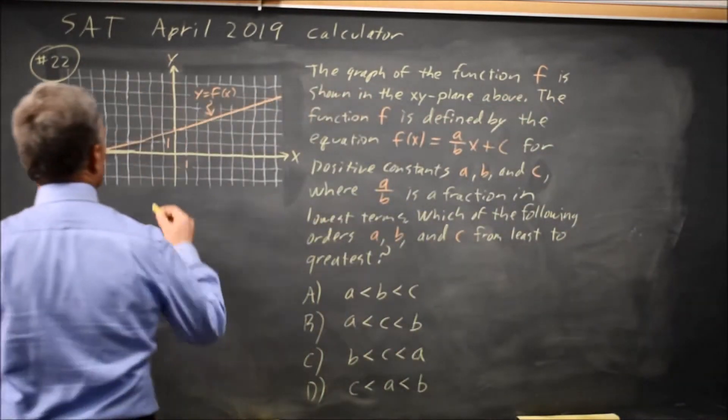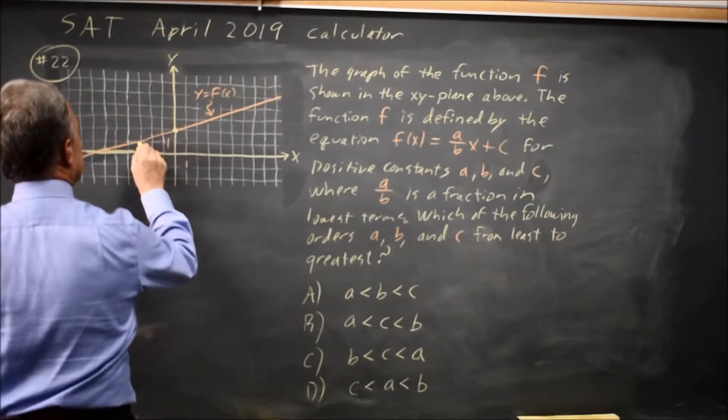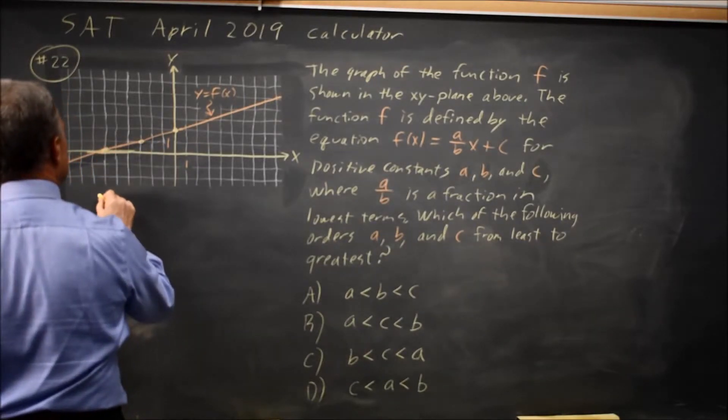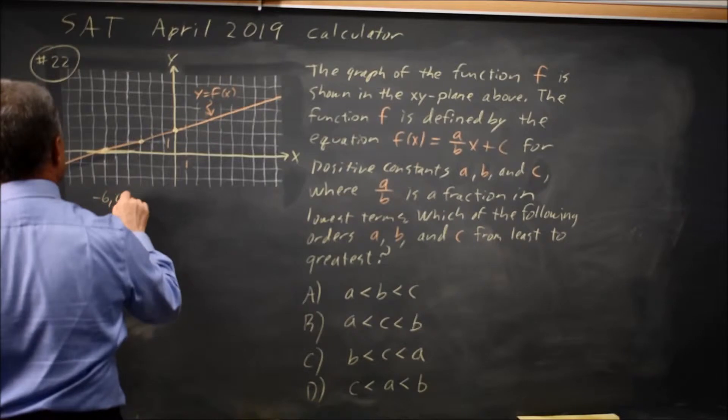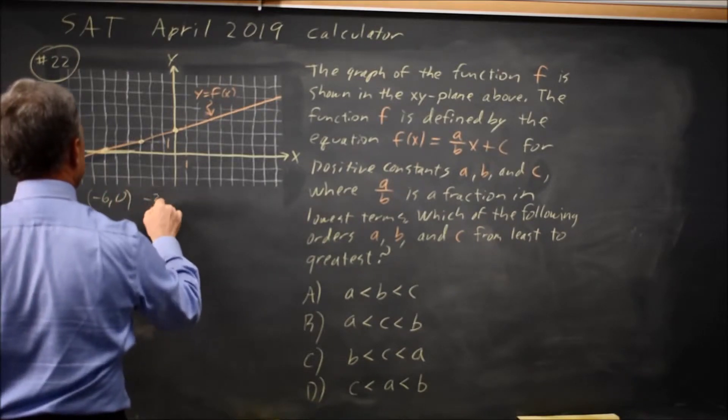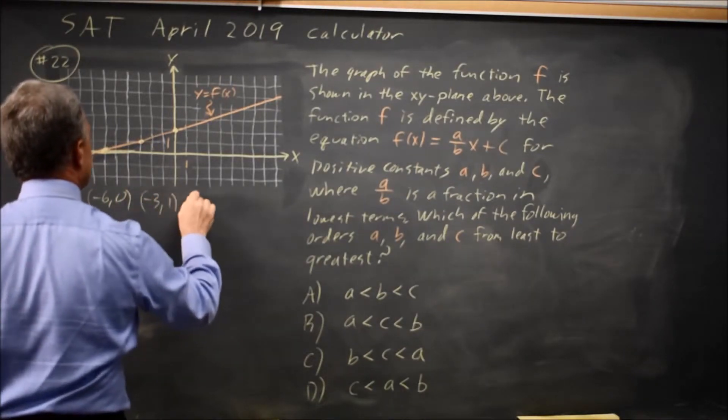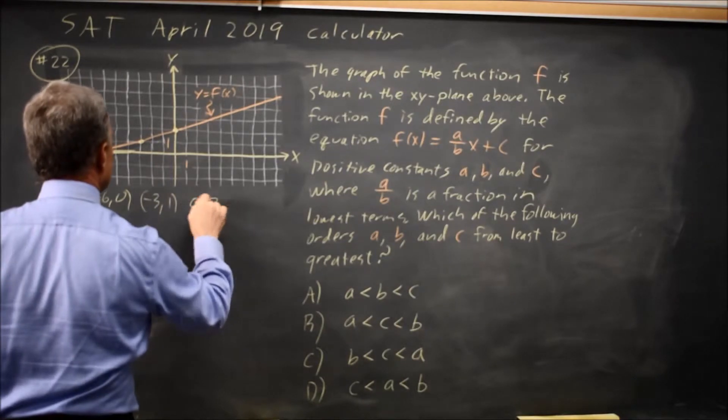Looking at these points, we go through x equals negative 6, y equals zero, and x equals negative 3, y equals 1, and x equals 0, y equals 2.